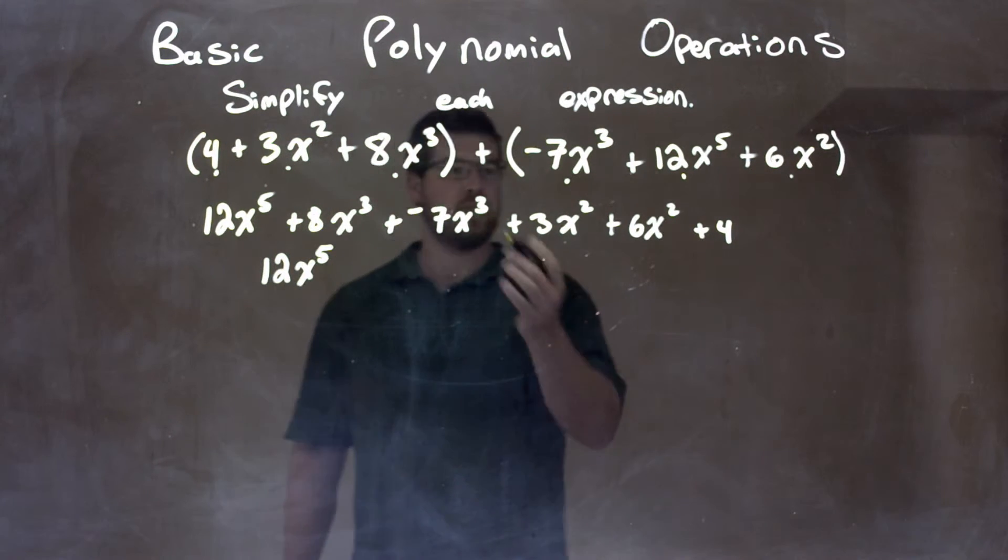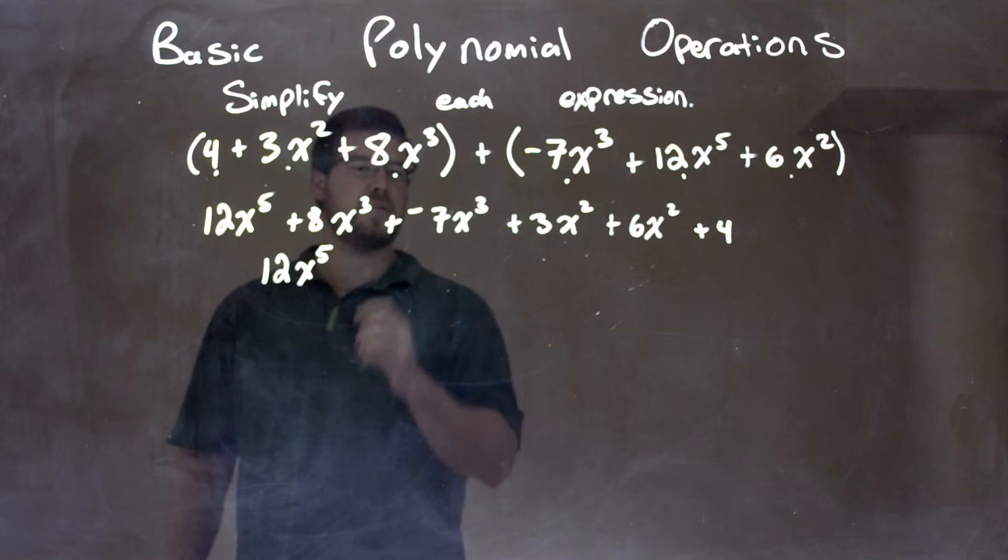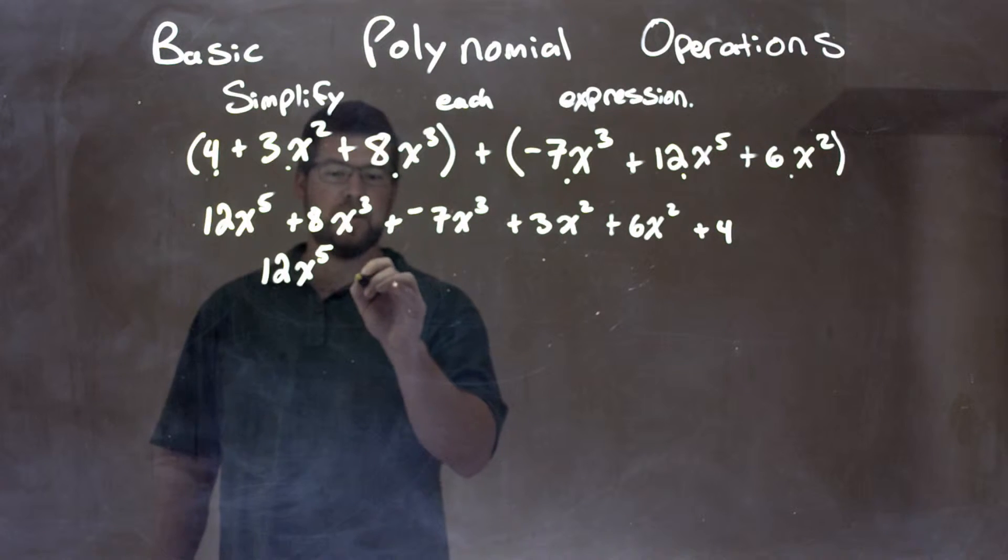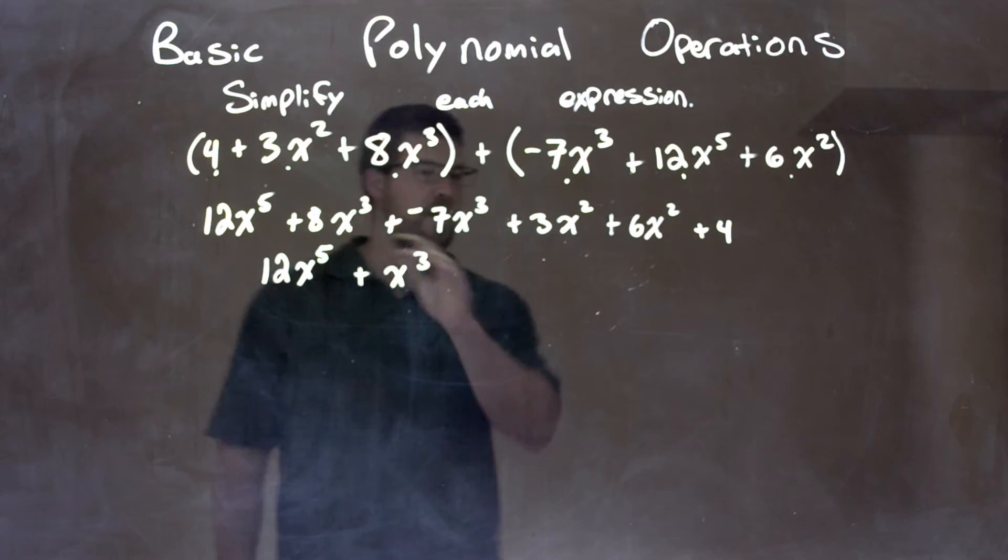But then I see to the third power, so I can combine this. 8x to the third plus a negative 7x to the third is just a positive 1x to the third, so we have plus x to the third right here. All right, got those.